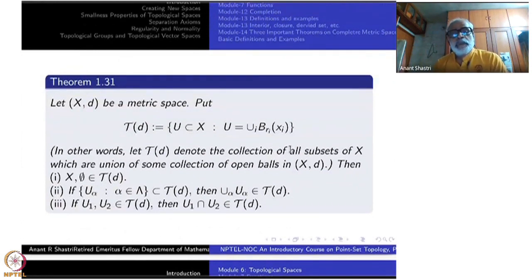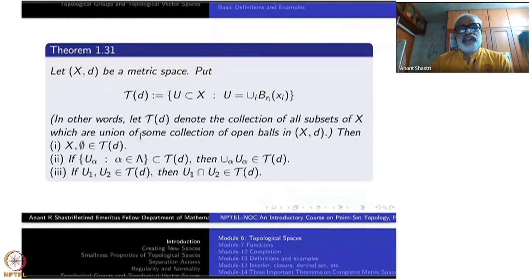Let X be a metric space, put τ(d), this is a collection of subsets of X, U contained inside X such that U is union of balls, open balls B_Ri(Xi). I remember are open balls with centered Xi and radius Ri. So I put union of that, I don't know how many I have taken here. It could be finite, it could be infinite, it could be uncountable, whatever it is. It could be empty also. So take all subsets U which can be written as union of balls. So that is my τ(d). Then this satisfies the following properties.